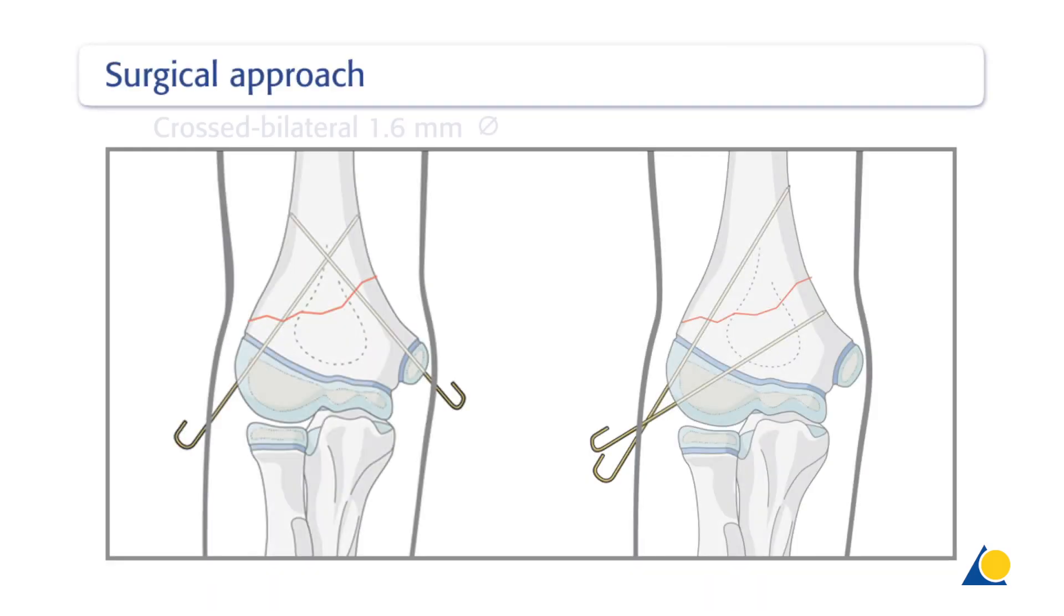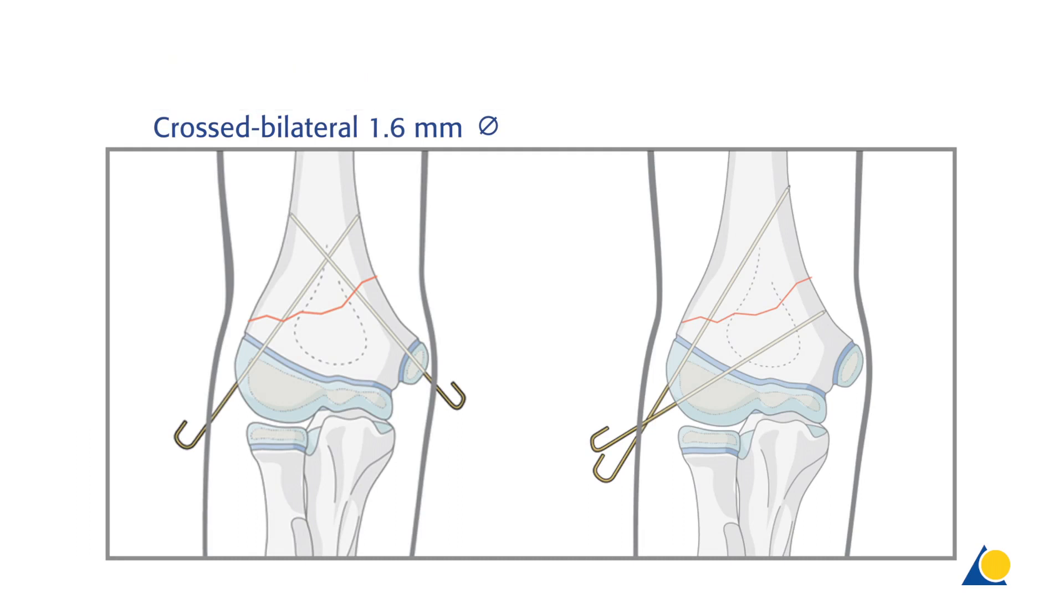The surgical approach to both the crossed bilateral 1.6 mm K-Wire fixation and the divergent radial 2 mm K-Wire techniques require stab incisions or a direct puncture with the guide wire at their respective entry points.